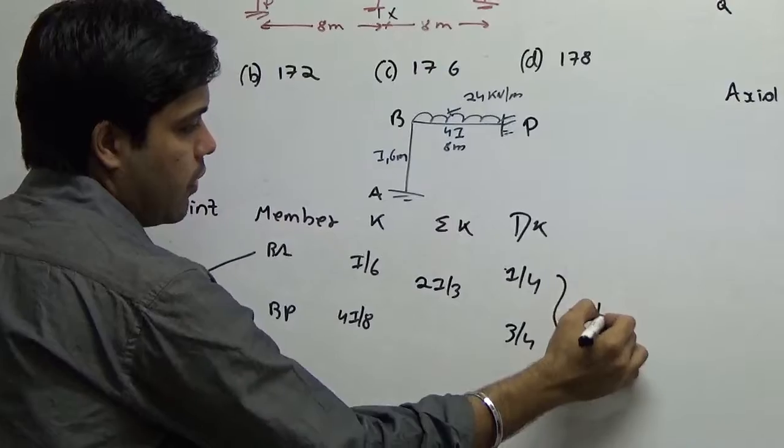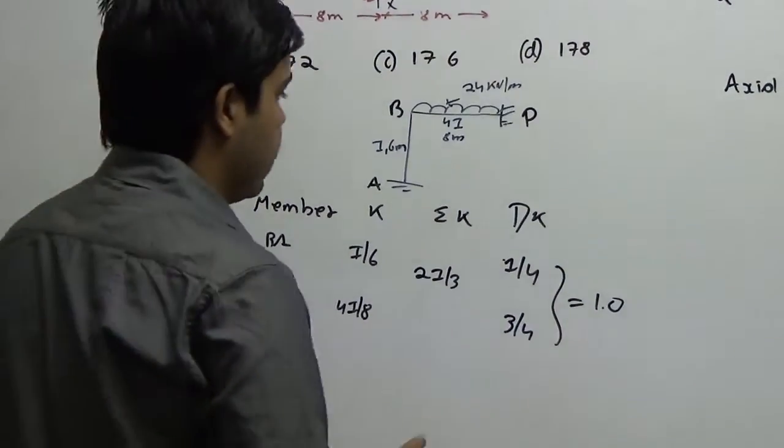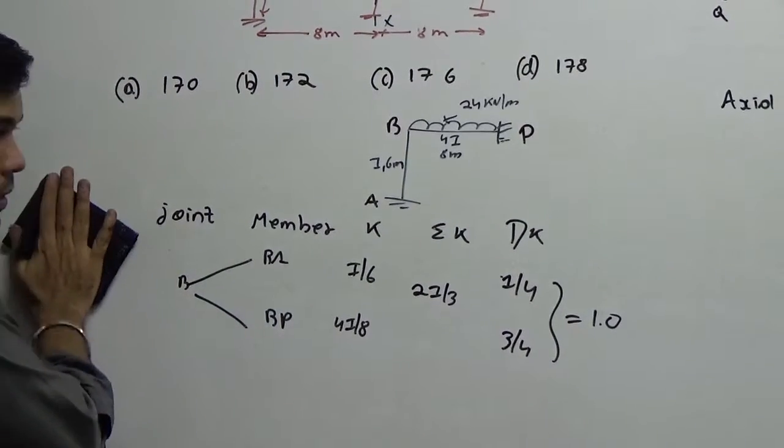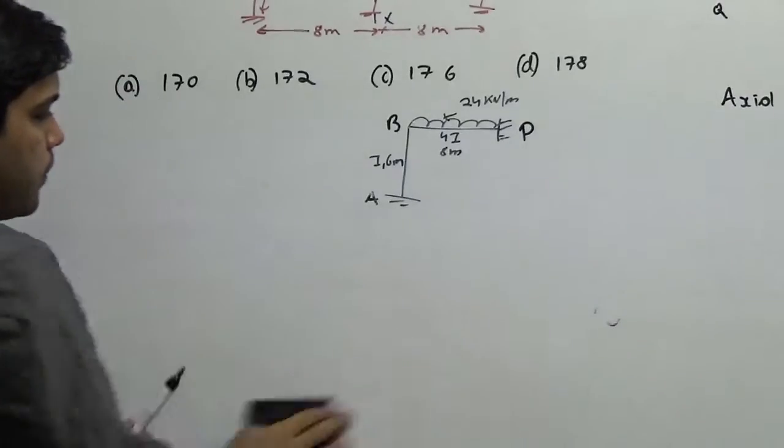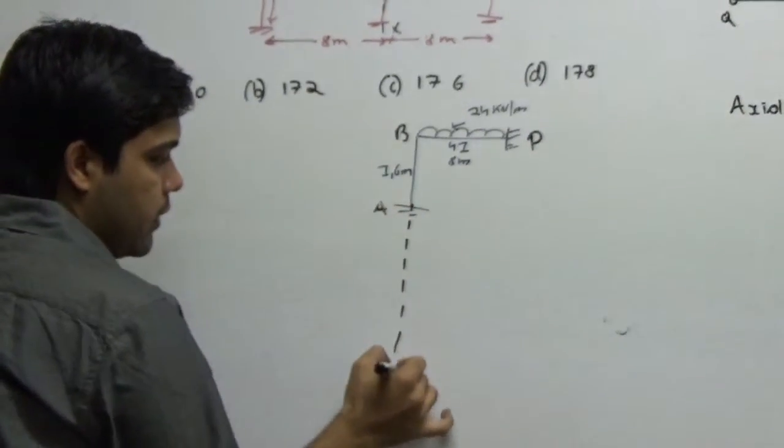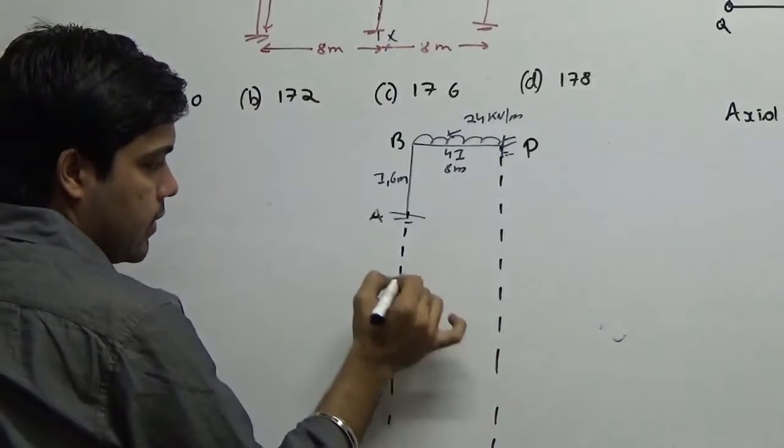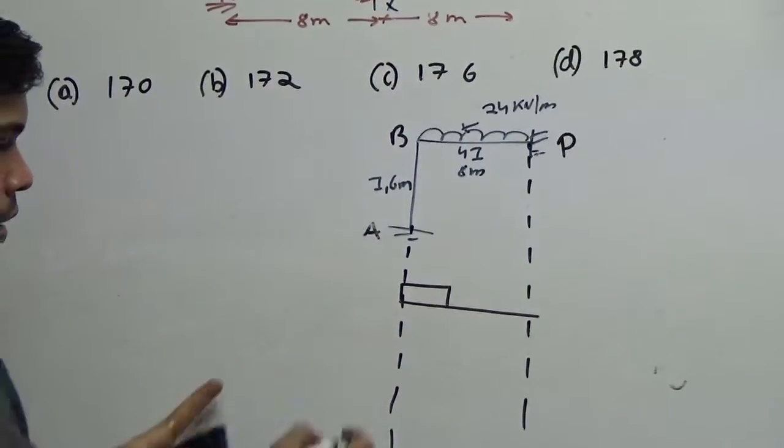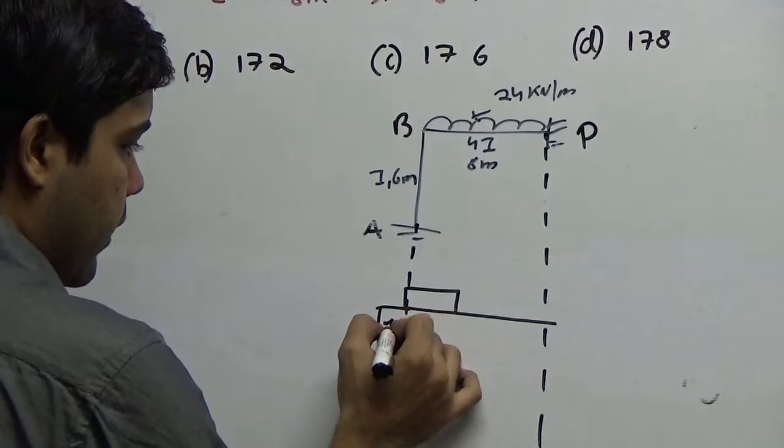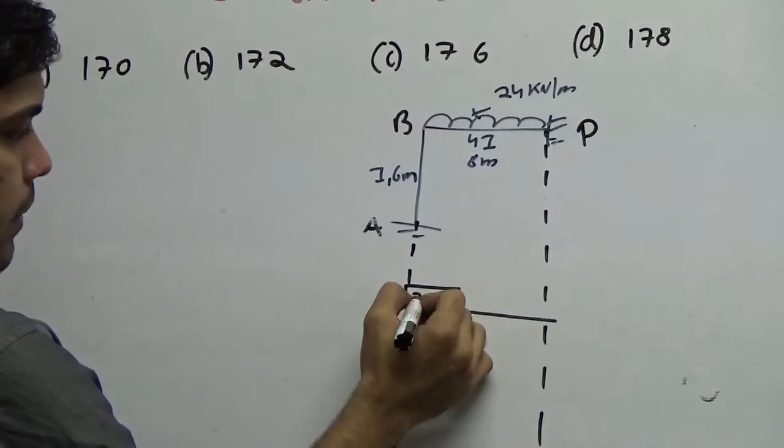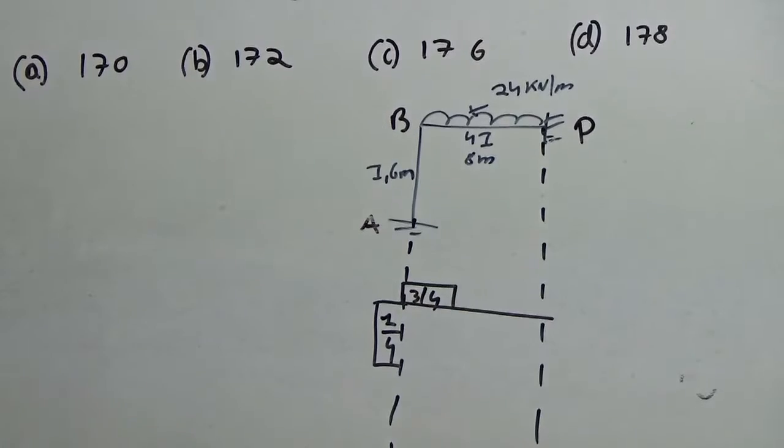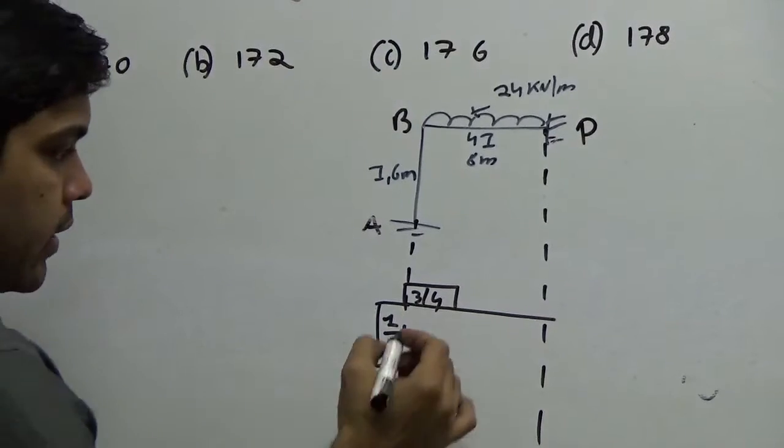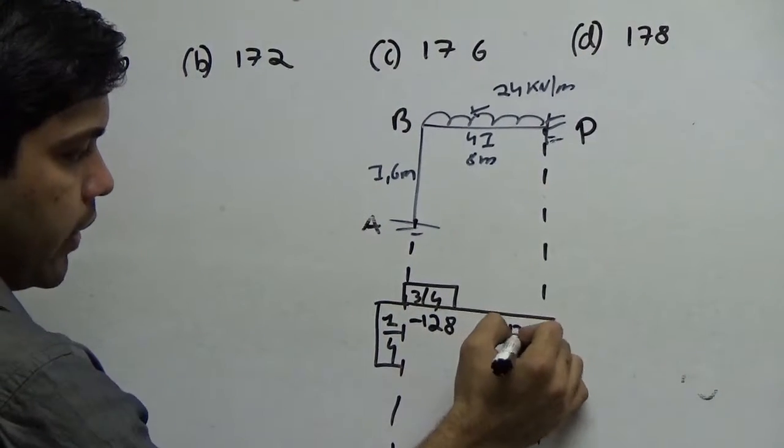So 1 by 6 divided by 2 by 3 gives you 1 by 4 here and this has to be 4 by 8 divided by 2 by 3 that is 3 by 4. Keep a note that the sum of this should be 1.0. Now after finding this out, the next thing I am doing is I am trying to directly calculate the moments now. Now what I do in moment distribution is I always try to expand this like this and I will write the distribution factors here. What was the distribution factor for BA? It was 1 by 4 here, 1 by 4 here and 3 by 4 here. Now what is the fixed end moment here? 24 into L square by 12, wL square by 12. Minus 128 here plus 128 here.